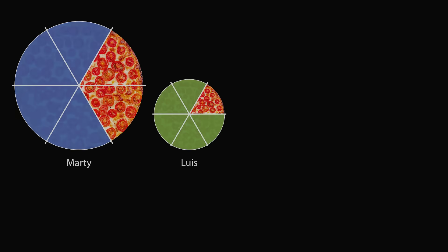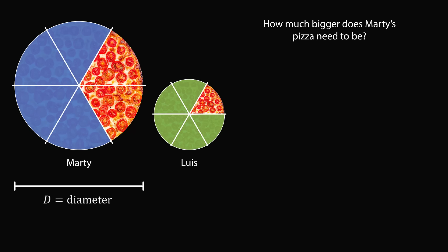In any case, returning to the problem at hand, we have a mathematical question. How much bigger does Marty's pizza need to be so that 4 sixths of Marty's pizza is at least as large as 5 sixths of Luis's pizza? So many times pizza sizes are given by the diameter of the pizza. But we need to know the area of the pizza, and this formula is in terms of the radius. So let's let the radius be equal to half the diameter. Let's do these variables for both of the pizzas.